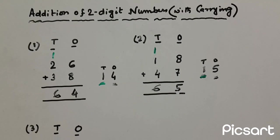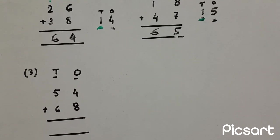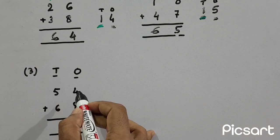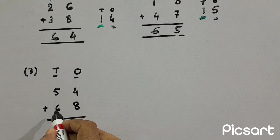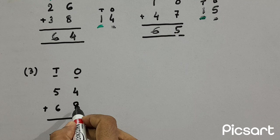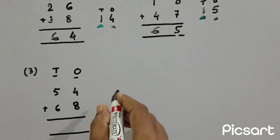We have taken one more example here and we'll add that number. Here five tens and four ones plus we have to add six tens and eight ones. Now four plus eight is twelve.